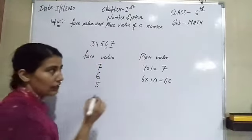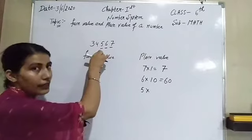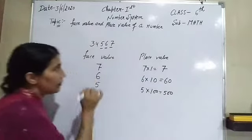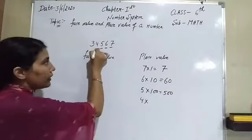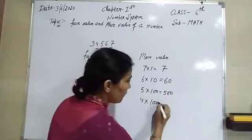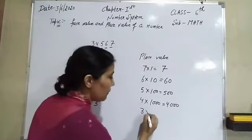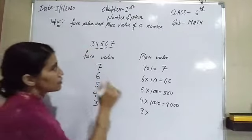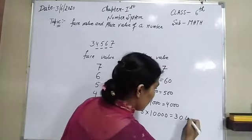Face value of 5 is 5. It is at the 100's place, so 5 × 100 = 500. Face value of 4 is 4; it is at the 1000's place, so 4 × 1000 = 4000. Face value of 3 is 3; it is at the 10,000's place, so 3 × 10,000 = 30,000.